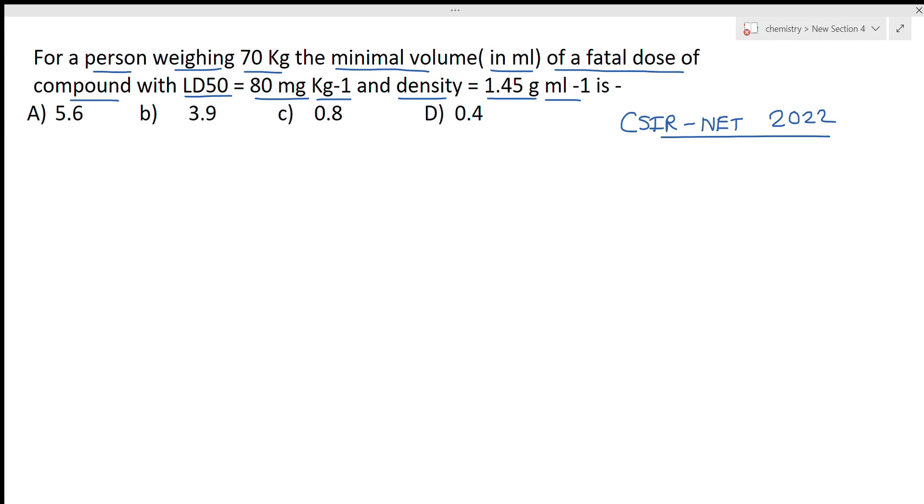First of all understand what is the meaning of this LD50. LD50 means lethal dose of 50. It means if we are injecting this dose to 100 persons, if 100 people are injected this dose, then 50 percent people will die. So this means LD50, the chances of fatality is 50 percent.